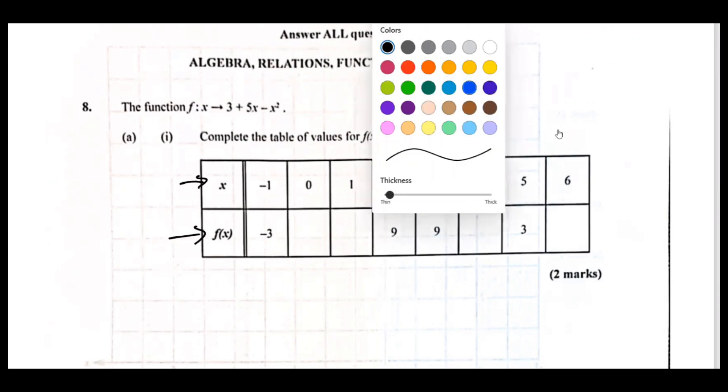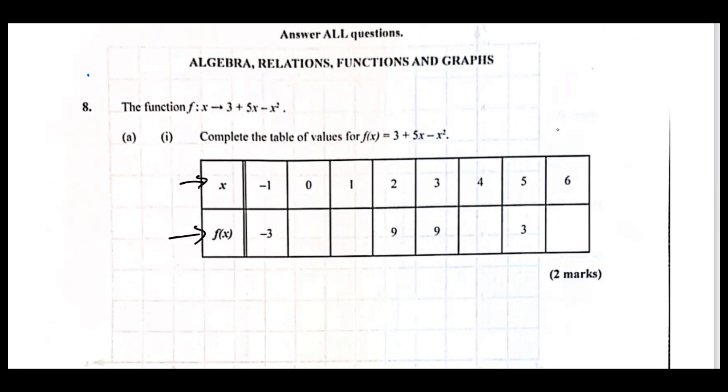For example, we want to know what is f(0), and that is going to be 3 + 5 times 0 - that's a minus, so if you notice I'm substituting 0 in the f(x) formula - minus 0². 3 + 5 times 0 - 0² gives you 3, so this is 3 right here.